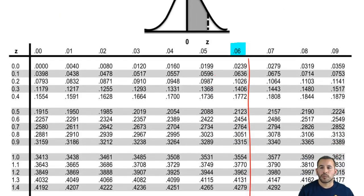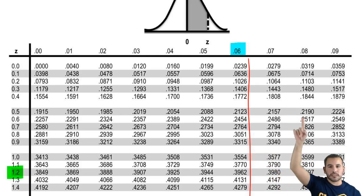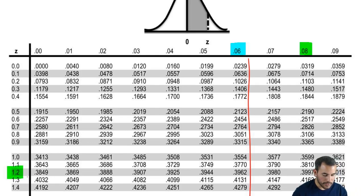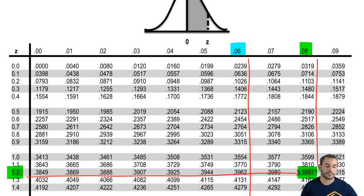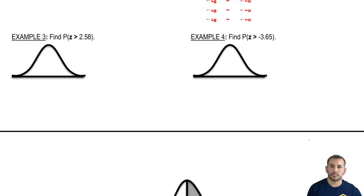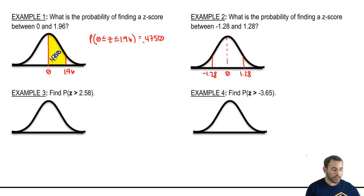We go to the left, 1.2. We have 1.2, and then we go across to 0.8, this column right here. We go down to 0.08, kind of connect the dots type of situation. So we go all the way down, and here we go. We got 0.3997.